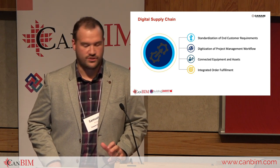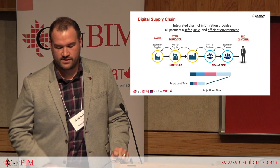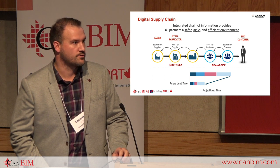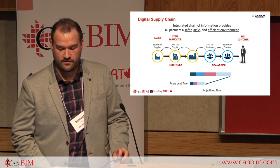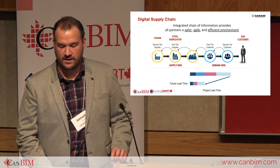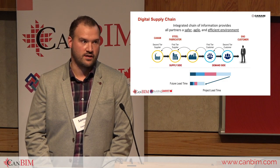To demonstrate this concept, we have a generic supply chain shown on screen with a supply side and a demand side. We can identify Can-Am as the second-tier supplier, our steel fabricator as the first-tier supplier, and the end customer at the very end. Our first or second-tier customers could be general contractors, architects, or building owners. The idea is for information to travel seamlessly up and down the supply chain in a digital format. If each party between Can-Am and the end customer improves speed and efficiency in their exchange, the project lead time will be reduced for everyone. An integrated chain of information provides all partners a safer, more agile, and efficient environment.